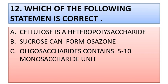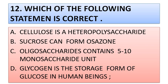Question number twelve: amylopectin has 5 to 10 monosaccharide units, and glycogen is the storage form of glucose in human beings. The correct option is option D — glycogen is the storage form of glucose in human beings.